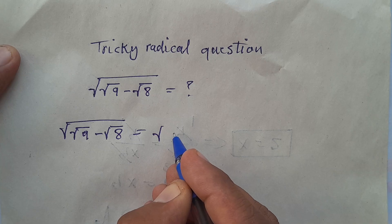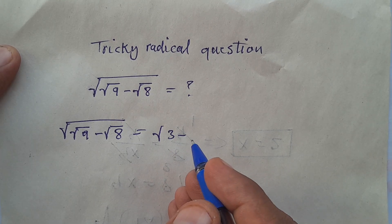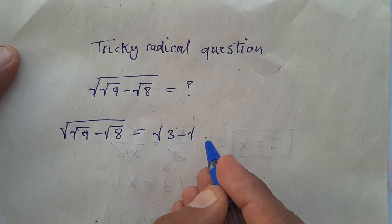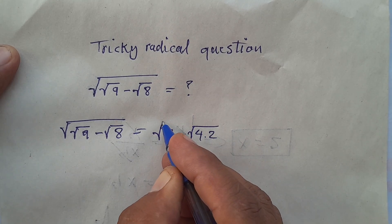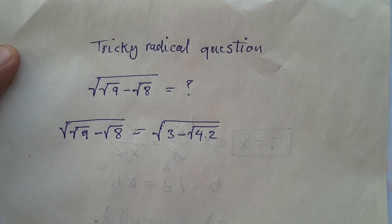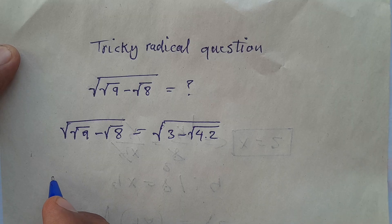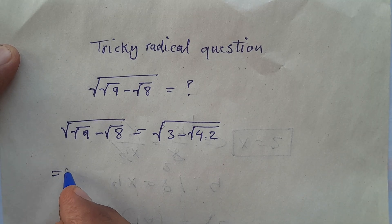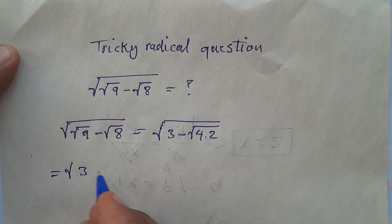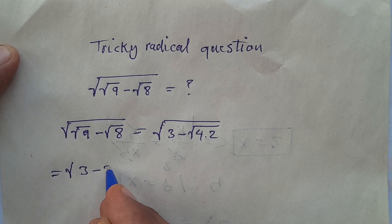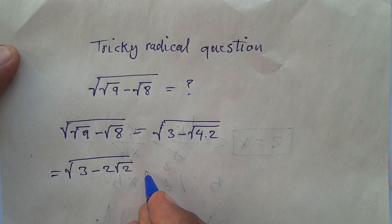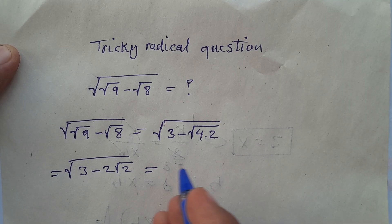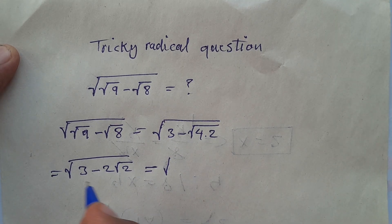Square root of 8 can be written as square root of 4 times 2, so this becomes square root of 3 minus 2 square root of 2.